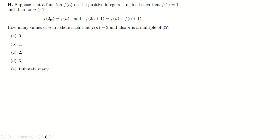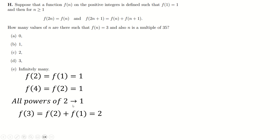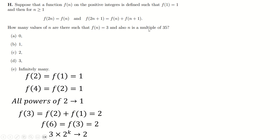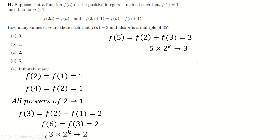If f(1) = 1, then f(2) = f(1) = 1, f(4) = f(2) = 1, so all powers of two equal 1. Then f(3) = f(2) + f(1) = 1 + 1 = 2, which means all numbers of the form 3 × (power of 2) give f = 2. Then f(5) = f(2) + f(3) = 1 + 2 = 3, so multiples of 5 times powers of two give f = 3. Similarly f(7) also comes out to 3. But neither 5 nor 7 times powers of two are multiples of 35 — we need both the 5 and the 7.